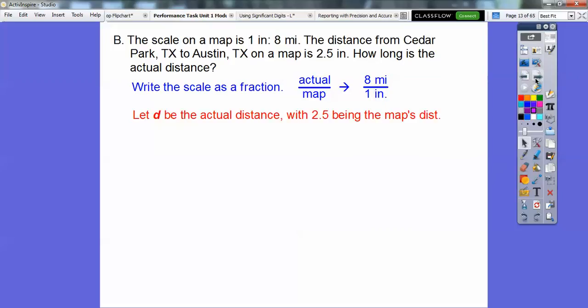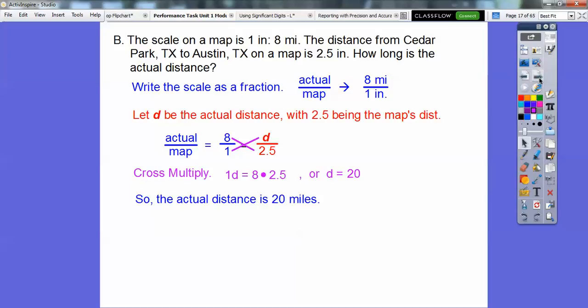So the actual distance is 8 miles for every 1 inch right here. So there's our ratio we're going to use, and then we're going to let D be the actual distance from Cedar Park to Austin, Texas. So 2.5 being the map's distance. Remember, the map's distance goes on the bottom because that's the way this ratio was set up. So the actual over the map is 8 over 1. We're going to let that be the actual distance over the map's distance, which is 2.5. And then now we cross multiply. We get 1D equals 8 times 2.5, which is equal to 20. So the actual distance is 20 miles.